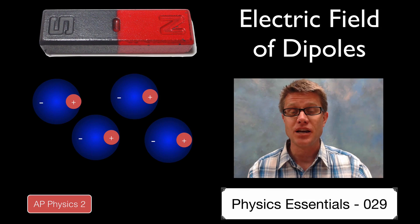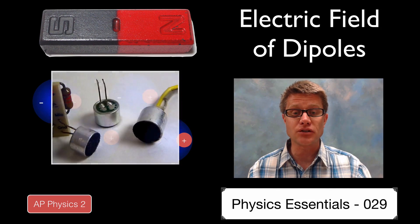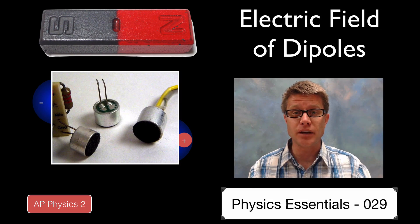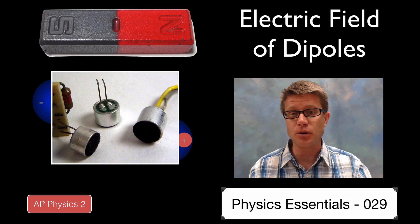So it's going to have a permanent charge, and these are actually really important in electronics. If you have a smartphone then the microphone inside it is probably an electret because it doesn't require any energy. It's permanently charged.